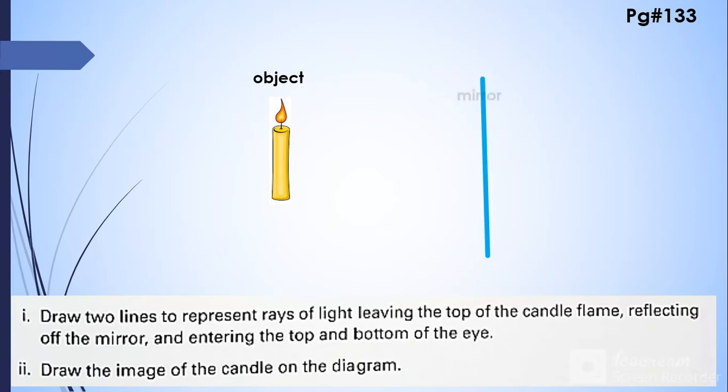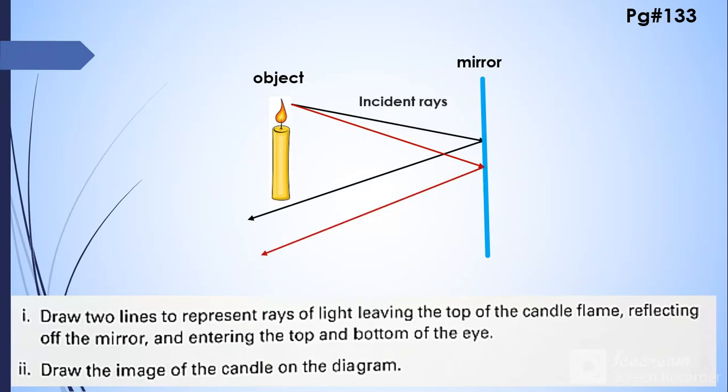The ray is coming from the flame of the candle and it is reflecting from the mirror. Another ray is coming from the candle and it is reflecting from the mirror and entering into the eye. So these are the incident rays, reflected rays, and this is the eye.